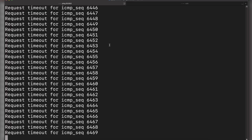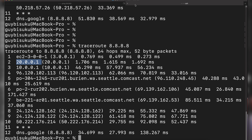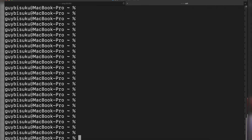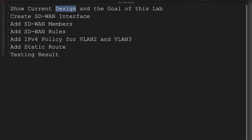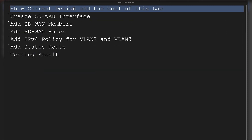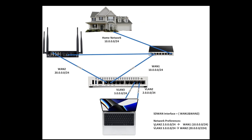Here I have some pings going to Google — right now they're failing — and some traceroutes we'll execute later. The goal is to make sure that VLAN 2 prefers WAN1. So if WAN1 and WAN2 are both active, VLAN 2 will use WAN1 first and VLAN 3 will use WAN2 first. If WAN1 goes down, VLAN 2 will switch to WAN2, and if WAN2 goes down, VLAN 3 will fall back to WAN1.